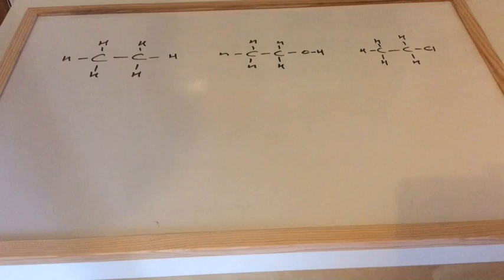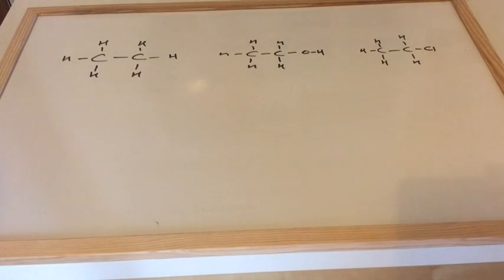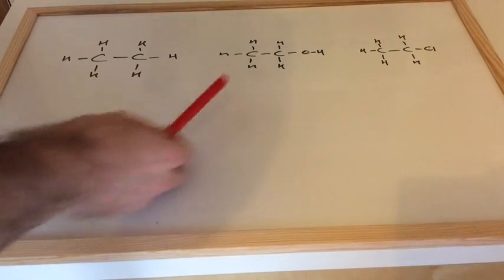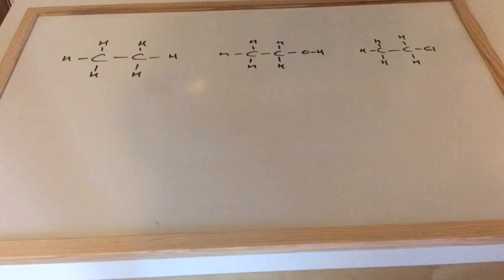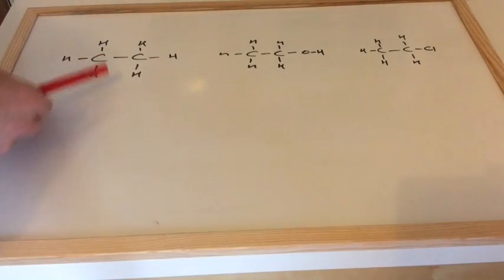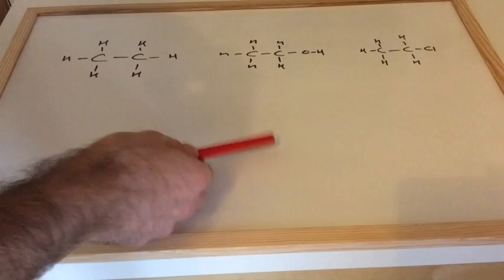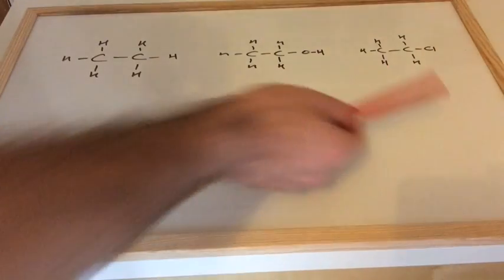We'll finish with this little task. We've got three molecules with two carbons in each. Three organic molecules. So we've got ethane, ethanol and chloroethane. What would the intermolecular forces be between ethane molecules, ethanol molecules, chloroethane molecules?